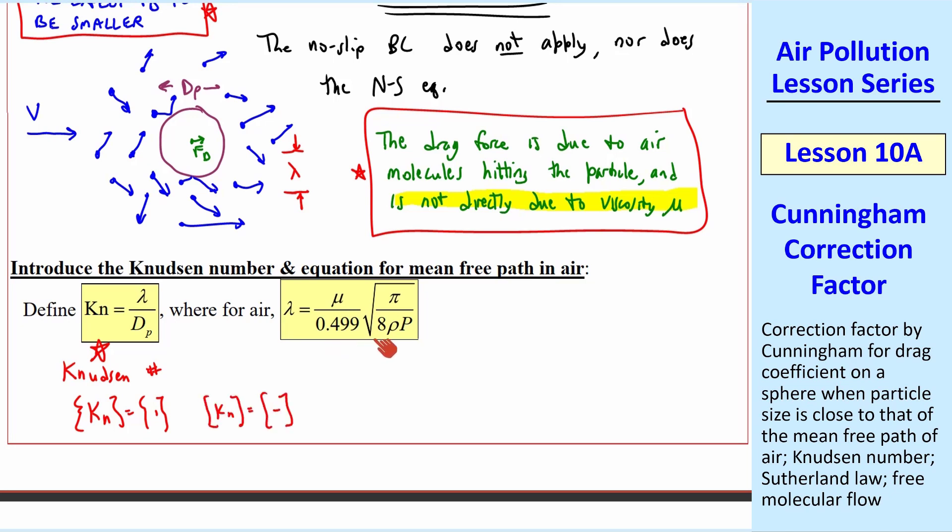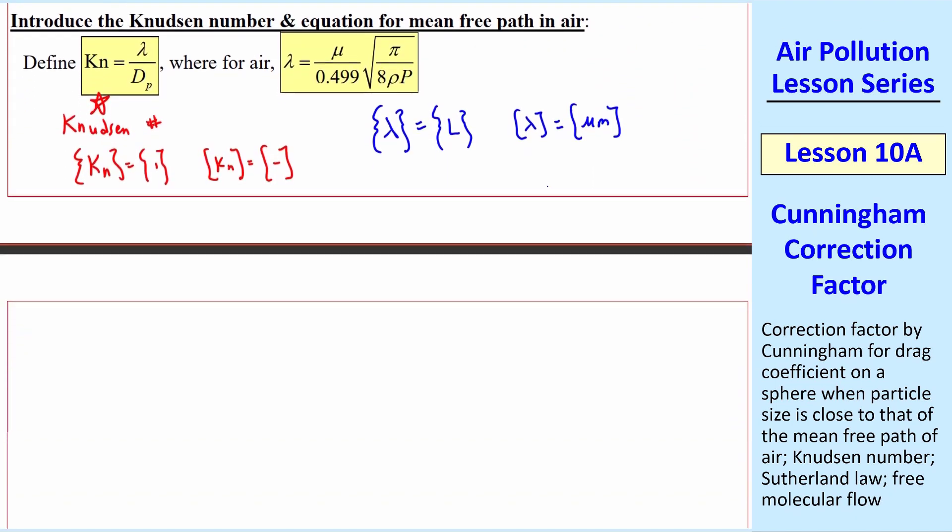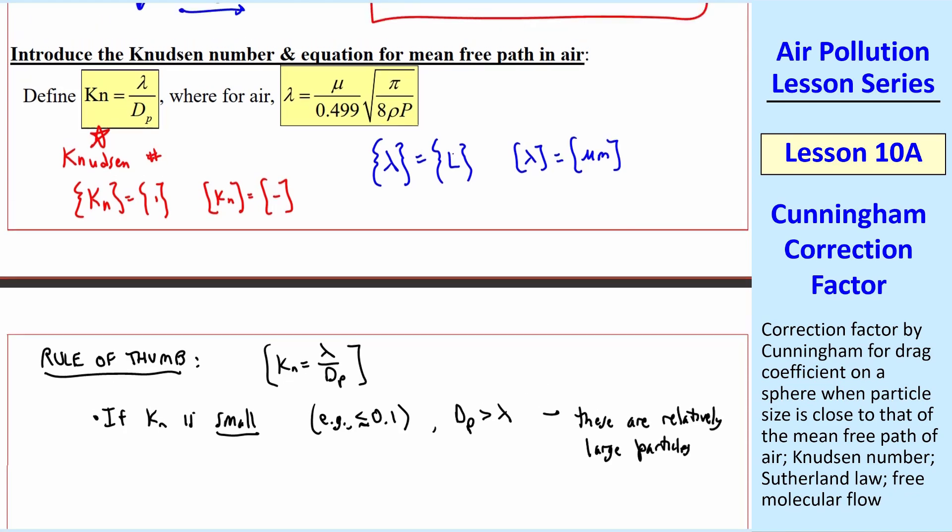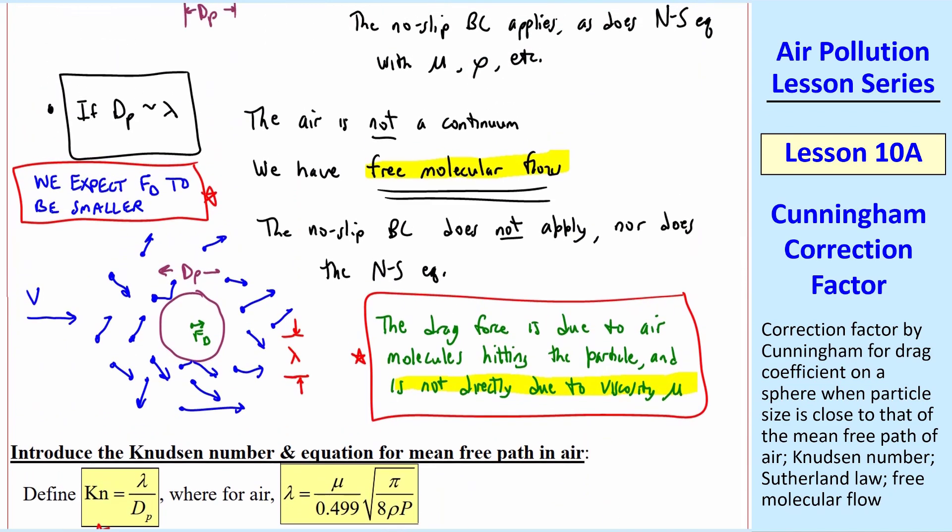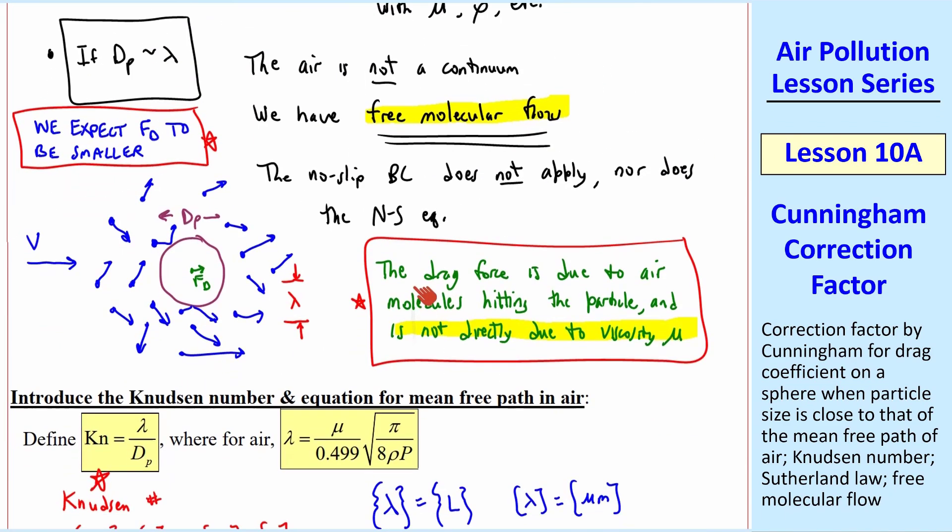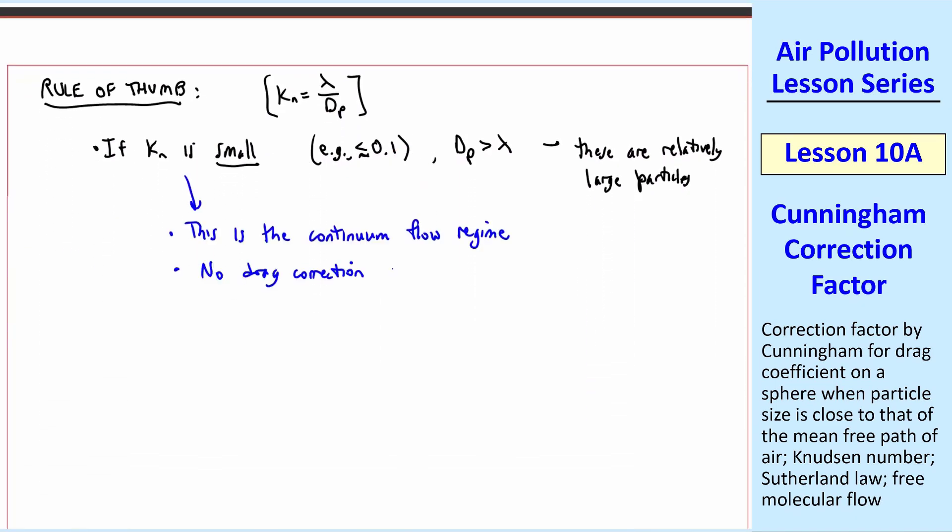Here's an equation for lambda, the mean free path. The dimensions of lambda are length, since it's an average distance between air molecules. Typical units are microns. Here's a rule of thumb for this Knudsen number. If Knudsen number is small, for example, less than about 0.1, dp is greater than lambda, so these are relatively large particles. This would be similar to this first case that I described here, where we treat the air as a continuum. So this case is the continuum flow regime, and no drag correction is necessary.